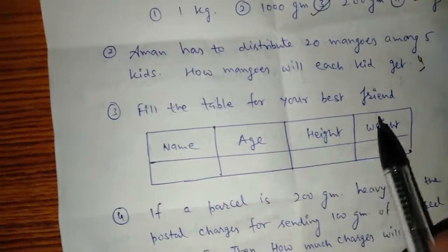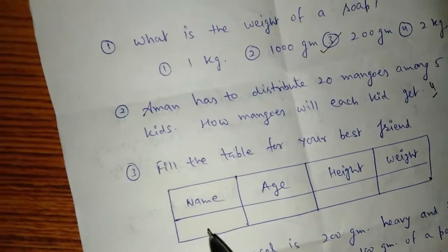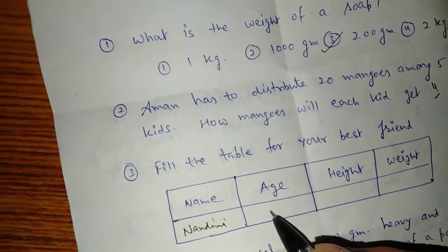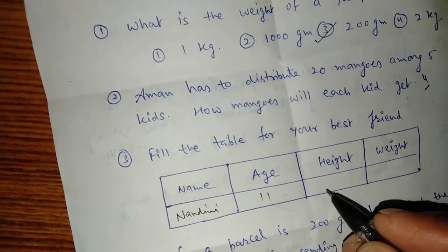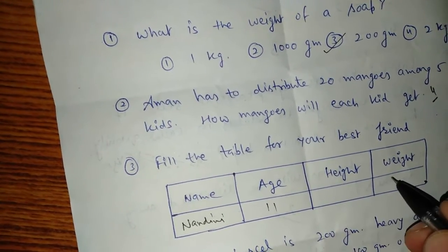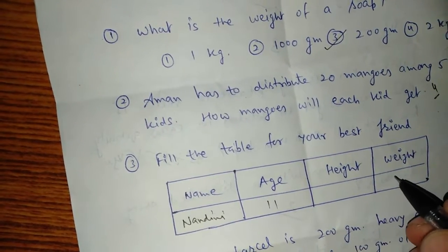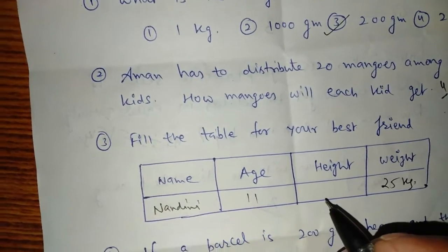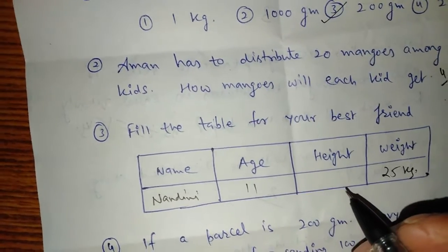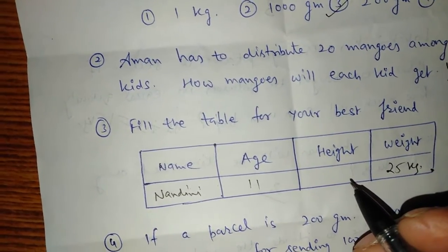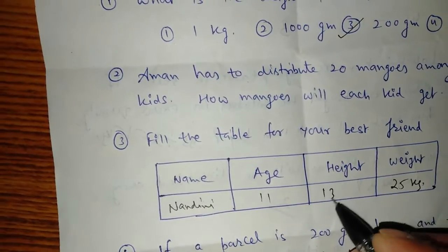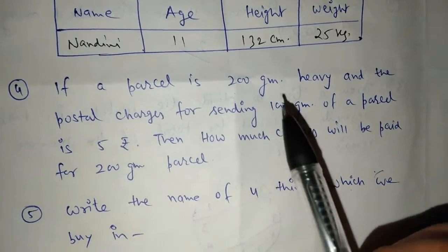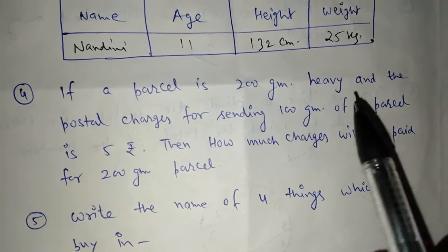Fill the table for your best friend. We have a table with the name of a child. The name is Nandini. How much is the age? 11. How much is the height? 32. How much is the weight? 25 kg. How much is the height? 32.